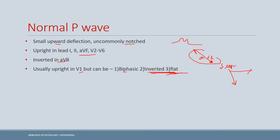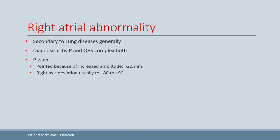Now we are ready to discuss abnormal P waves. There are two types of abnormality: right atrial abnormality and left atrial abnormality. In right atrial abnormality, we can have enlargement or hypertrophy of the atria. Generally speaking, atrial abnormalities are associated with lung diseases such as pulmonary hypertension or COPD, because these create problems in the right atrium.